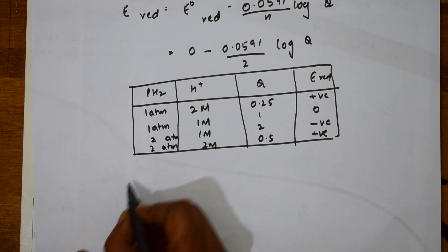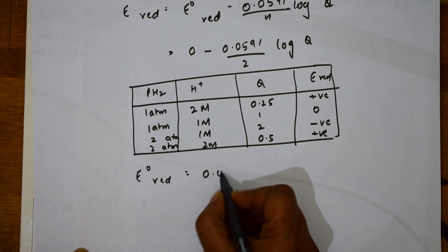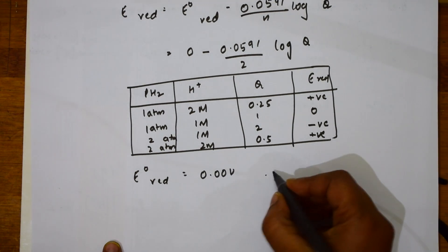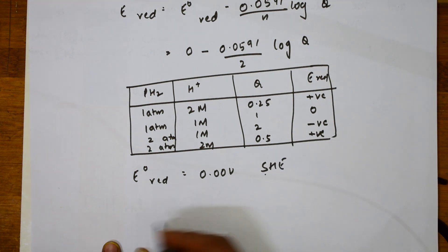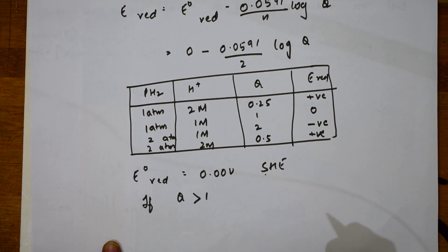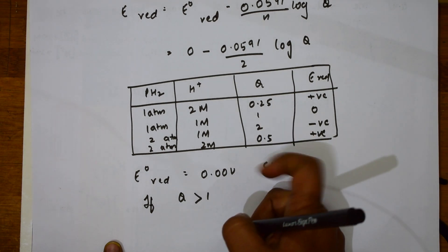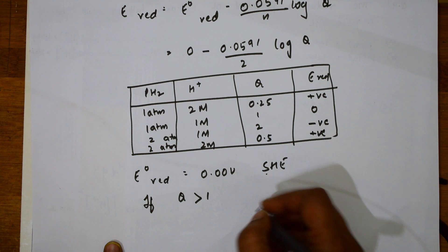Now, remember, for E° reduction, that is for your standard hydrogen electrode, 0 volts, this is SHE. Now, condition is, if Q is greater than 1. If the Q value is greater than 1, according to the table, I am concluding.